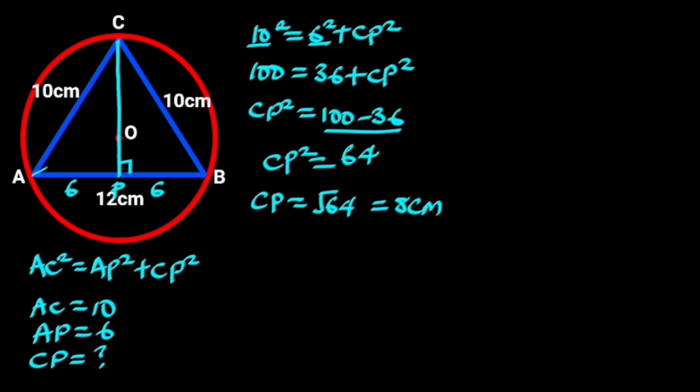Next we draw a straight line from A to O. From the figure we know that CO is the radius of the circle, so let's label line CO, R. AO is also the radius of the circle, let's also call it R. Since CP is 8 cm, OP will be 8 minus R.